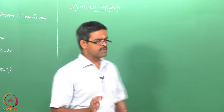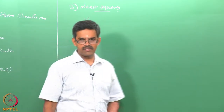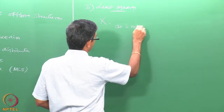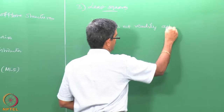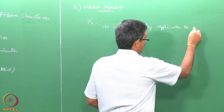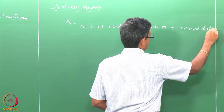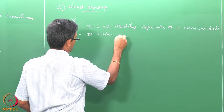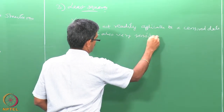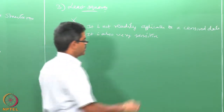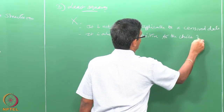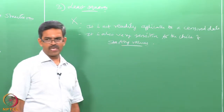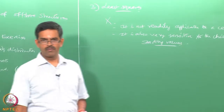However, there are a few disadvantages with this method. It is not readily applicable to sensor data. Further, it is also very sensitive to the choice of starting values. Therefore, one has to be very careful in using this method for estimating parameters of probability distribution.